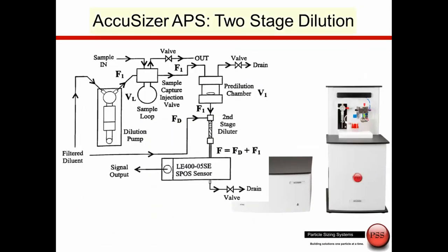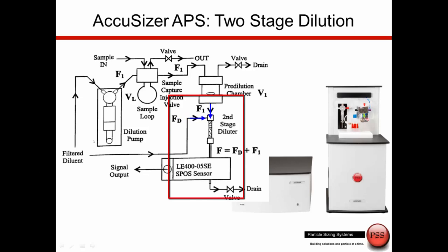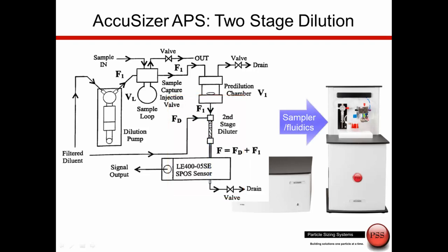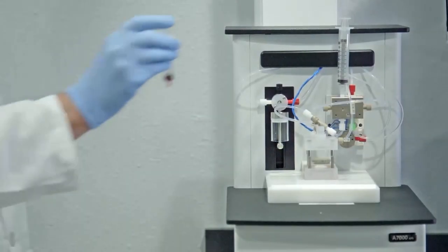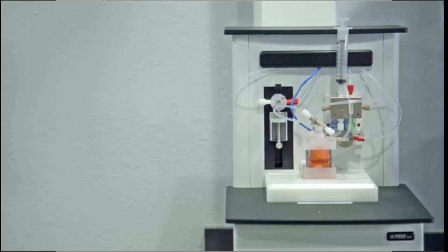For higher concentrations, the AccuSizer APS is a two-stage dilution system. The sample is pumped into a sample loop, then transferred to a pre-dilution chamber for the first stage of dilution. The second stage occurs as the sample is brought down to the sensor through an additional line of filtered diluent, with a controllable flow rate to adjust the final dilution factor. The sample can be pumped into the chamber or injected directly — one of three introduction methods — and then goes through this two-stage dilution for measurement.